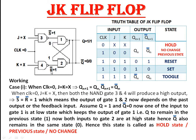This can be explained by assuming the previous condition was a set state. So Q = 1 is fed back to the input of gate 2, and Q̄ = 0 is fed back to gate 1 as input. One of the inputs to gate 1 is at low state, hence it maintains the output at 1. This 1 and the R̄ input maintains a low output at gate 2. Hence there is no change in output — this is also called the hold state or previous state.